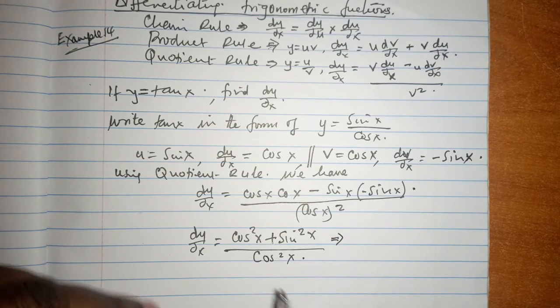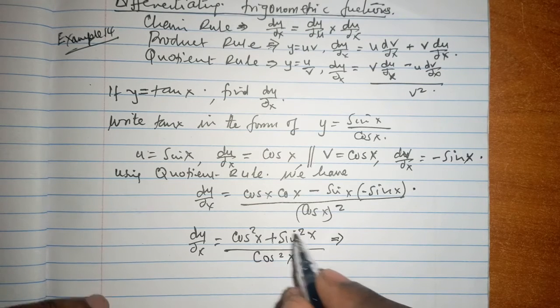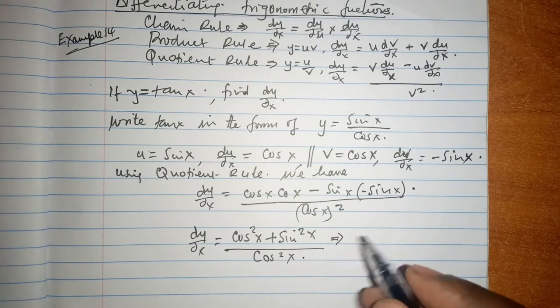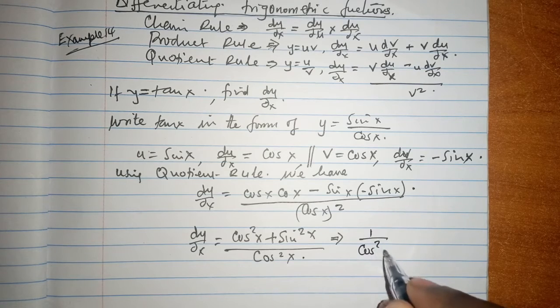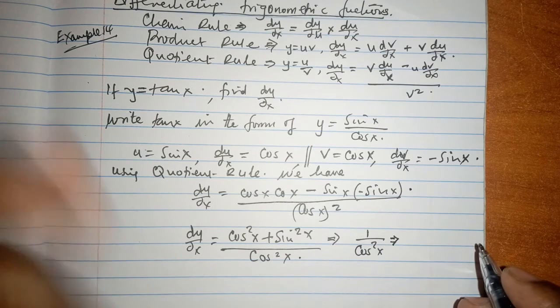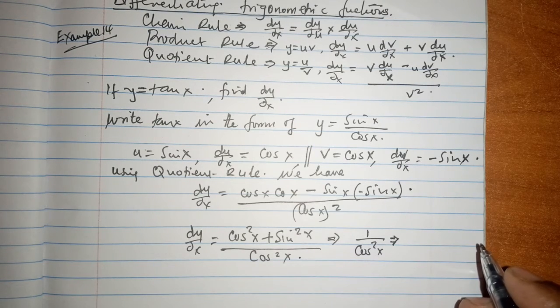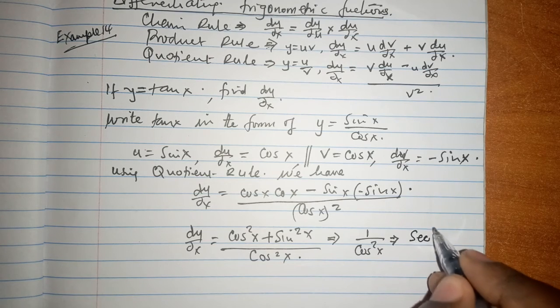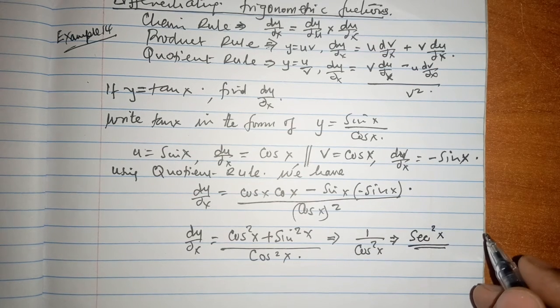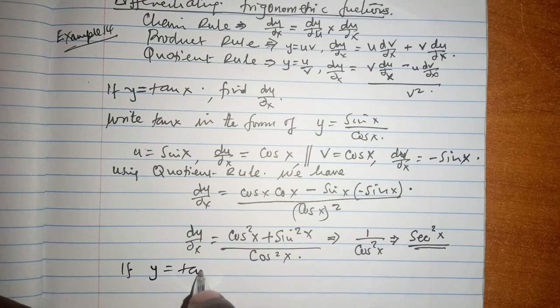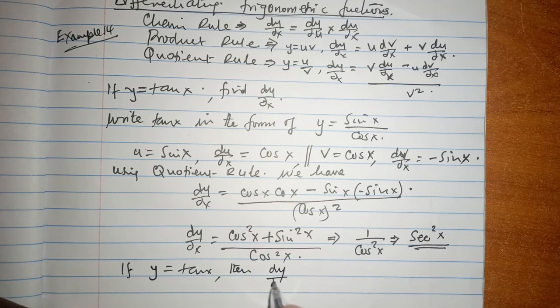By now everybody knows the numerator gives us 1, because this is the very primary trigonometric identity: cos squared x plus sin squared x is 1. And we have 1 over the cosine squared of x. And all of us now know 1 over the cosine of x is simply the sec of x. So at that particular point, 1 over the cosine squared of x is simply the sec squared of x.